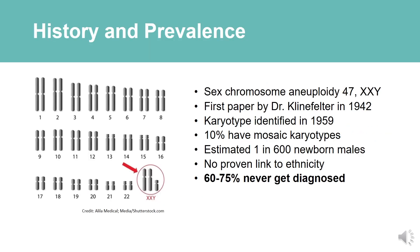Today we know KS is the most common chromosome disorder, affecting 1 in 600 male births. There is no proven ethnic impact — it equally affects all races and nationalities. We also know that a large percentage may never be diagnosed, as many as 60 to 75% will go undetected, leading to significant mistreatments for tens of thousands of individuals.